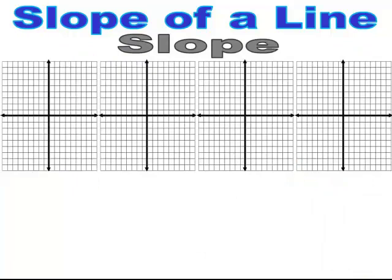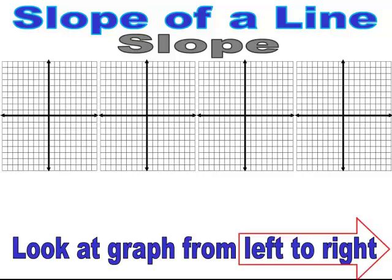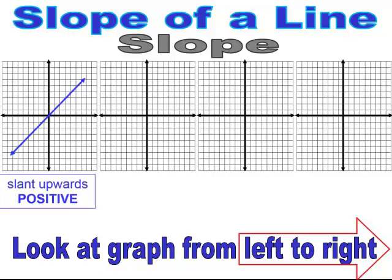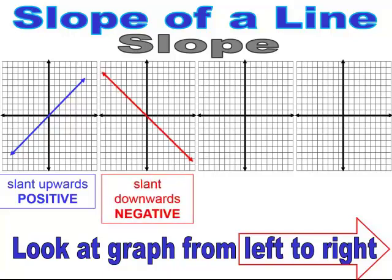When determining whether a slope is positive, negative, zero, or undefined, you always want to look at the graph from left to right. If it slants upward from left to right, it's a positive slope. When the slope is going down — the slant is down from left to right — it is a negative slope. So a slope up is positive, a slope down is negative.